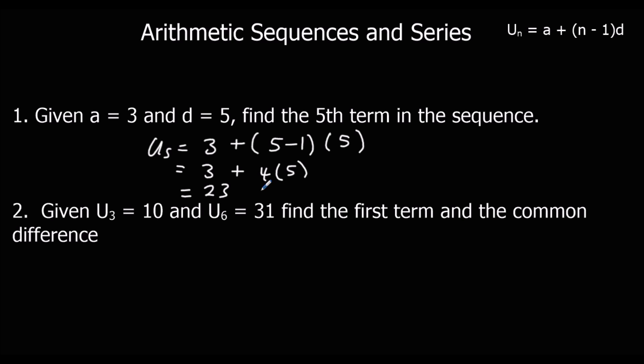Secondly, we've been given two terms in the sequence, and we need to find the first term and the common difference. This is simultaneous equations. We've got two equations, when we make them, we've got two equations, and two unknowns. The first term and the common difference.